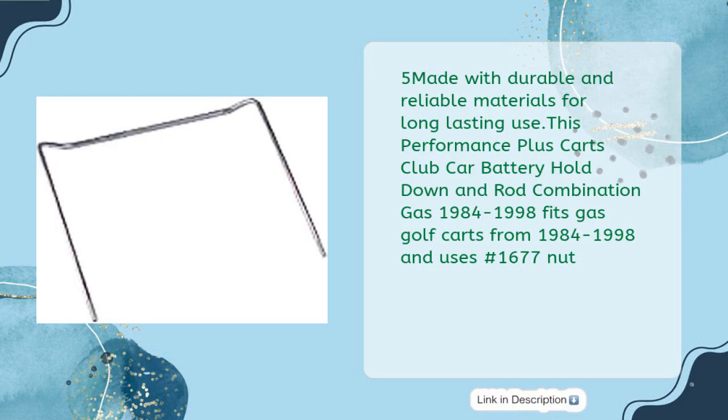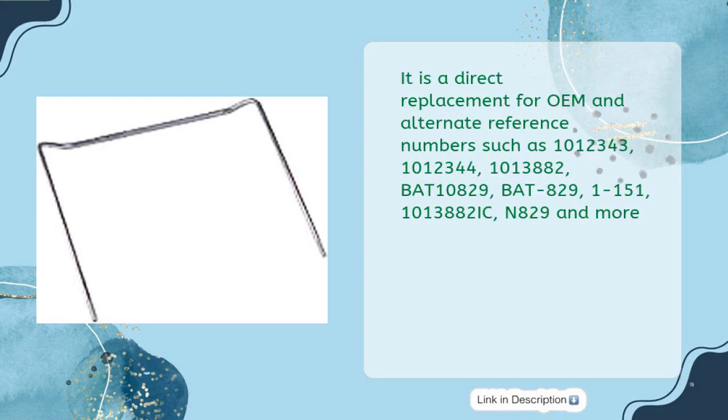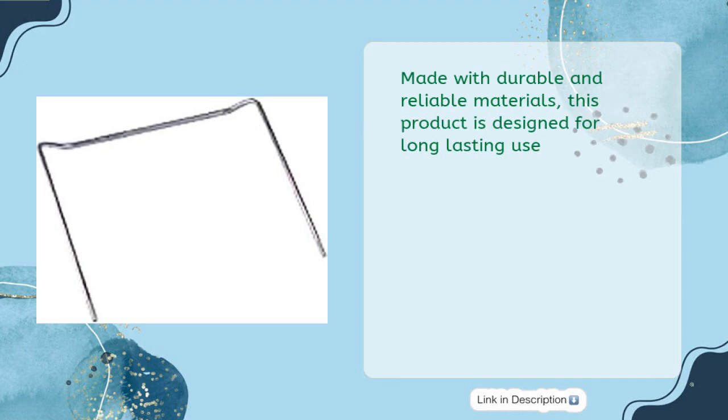This Performance Plus Carts Club Car battery hold down and rod combination gas 1984 to 1998 fits gas golf carts from 1984 to 1998 and uses #1677 nut. It is a direct replacement for OEM and alternate reference numbers such as 1012343, 1012344, 1013882, BAT-10829, BAT-829, and more. Made with durable and reliable materials, this product is designed for long-lasting use.